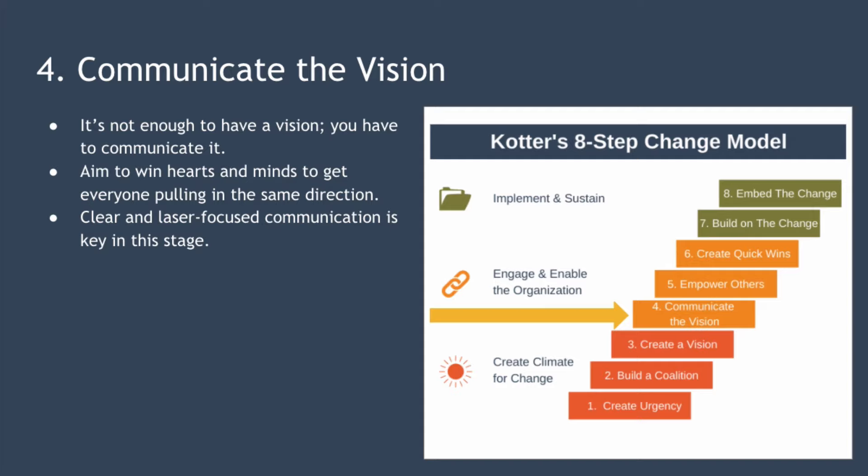Step four is to communicate the vision. It's not enough to have a vision — you need to communicate it. You want to win the hearts and minds of those who have to execute the change. That way, you will create a willing army of people who want to make the change happen. In essence, you want to get everyone to buy in to the initiative, understand the urgency of the change, and all want to pull in the same direction.